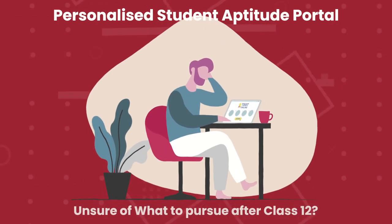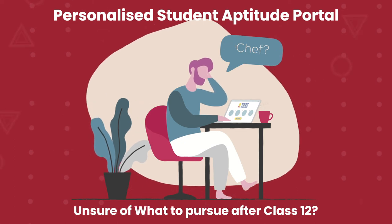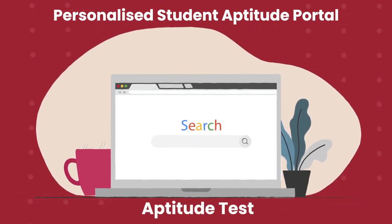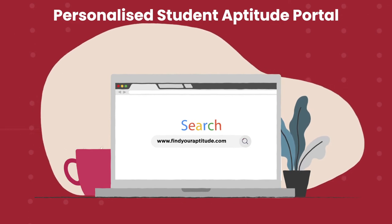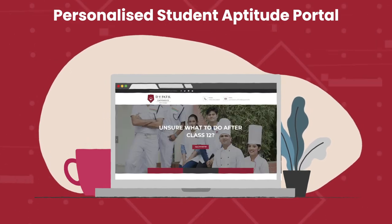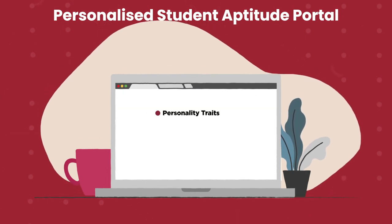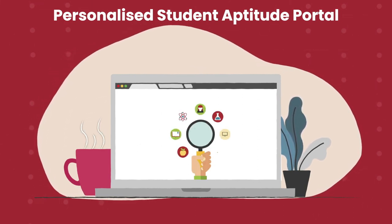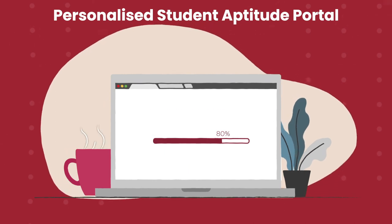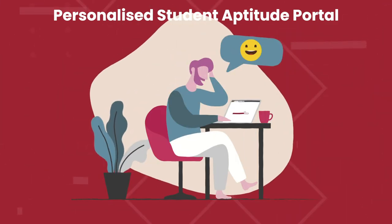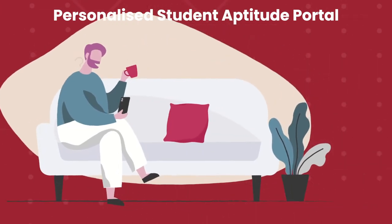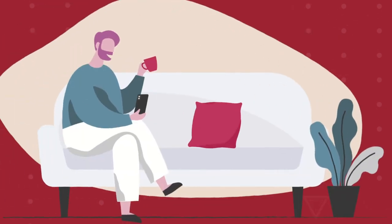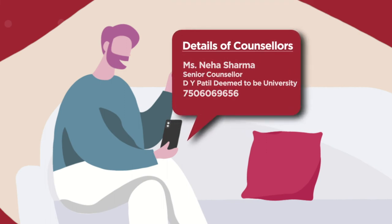Let us assume some of you are confused about what option to choose after class 12th. In that case, we recommend you try out our exclusive aptitude test. Visit www.findyouraptitude.com to begin. We've designed these tests carefully as they check your personality traits, strengths, subject knowledge, and then we tell you the most suitable career option. The results are instant and flash on your screen immediately after you complete the test. If you are still confused and require personalised guidance, our senior counsellors can guide you through WhatsApp and help you choose the best career option. Their name and contact details are on the screen for your reference.